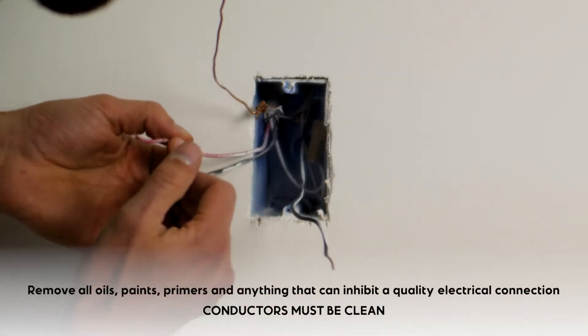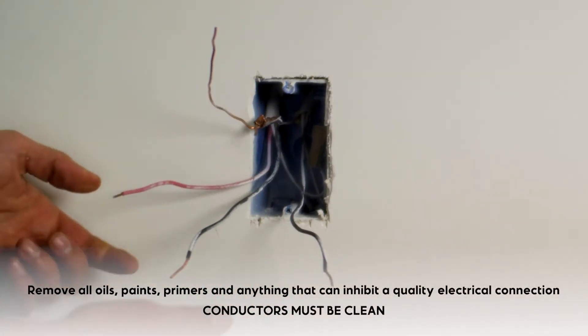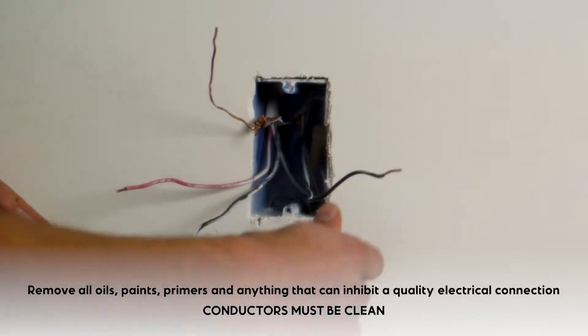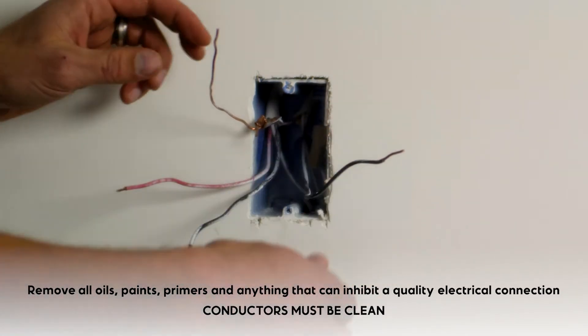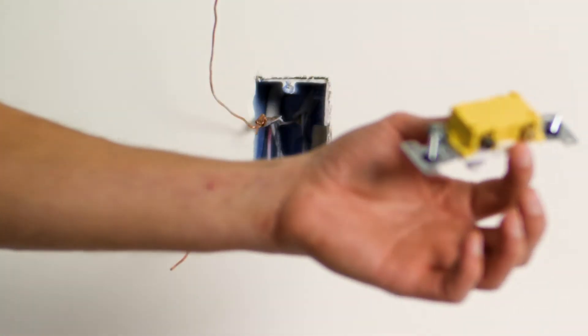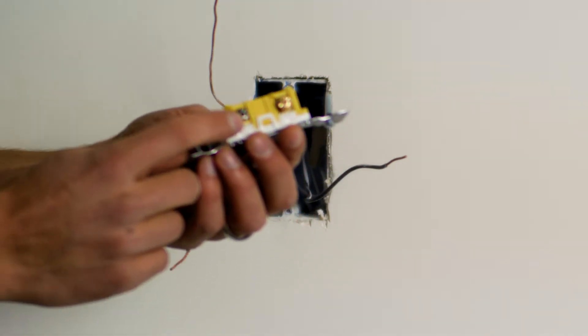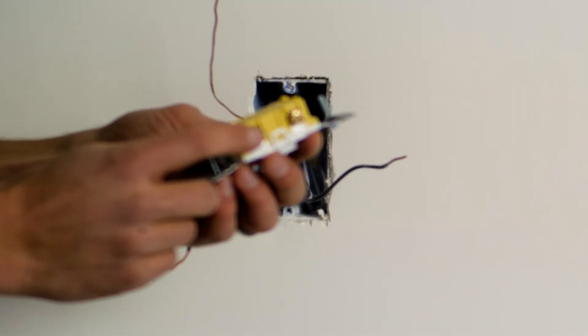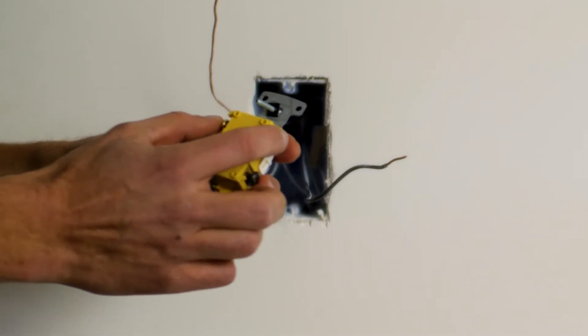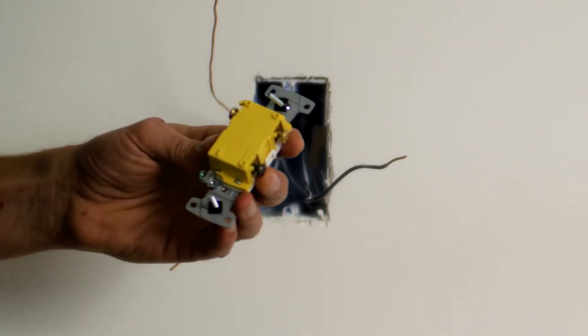At this point, I've got a red and a black from my three-wire—these are my travelers. I have a hot or common, and I've got a ground connection. I've got four terminals: a ground, a common which is designated by the odd color terminal screw, and I've got two brass screws designed for my travelers.